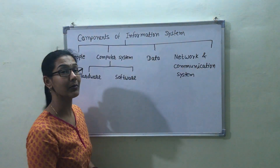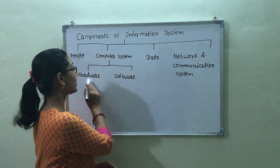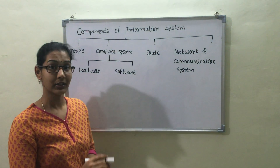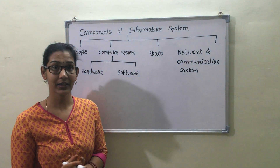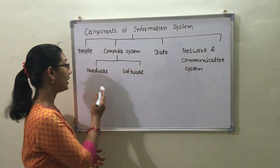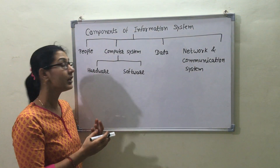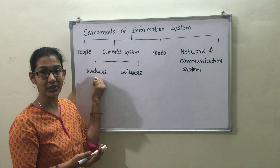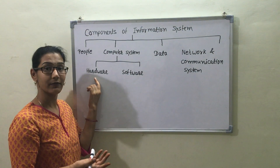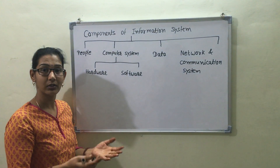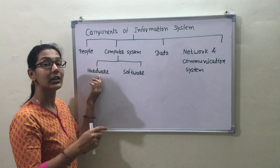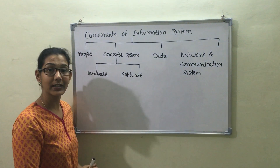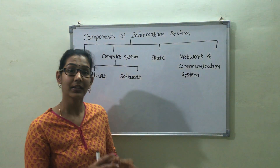The second component is the computer system, which is a combination of hardware and software. Hardware is the tangible part that physically exists — it can be touched and seen. Hardware includes all devices that support the functions of the information system, such as input devices like keyboard, card reader, and mouse.